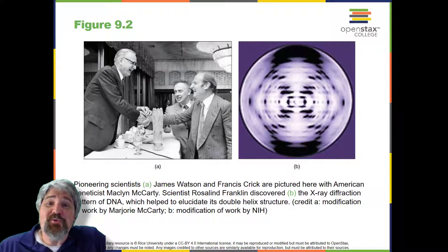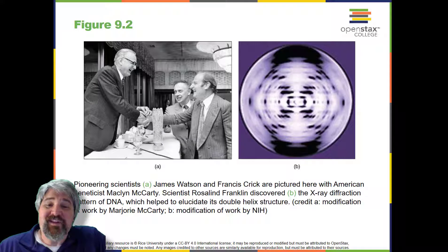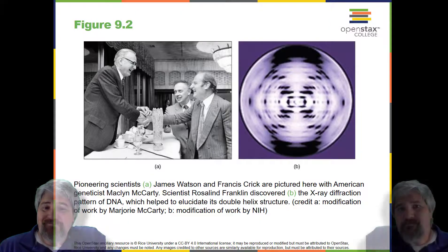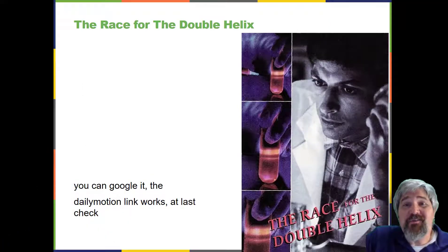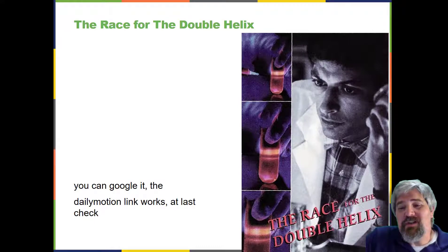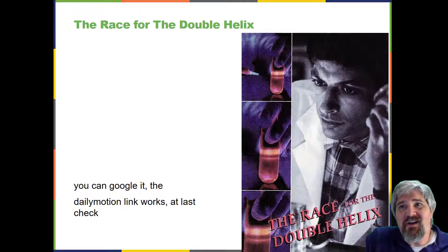In 1962, James Watson, Francis Crick, and Maurice Wilkins were awarded the Nobel Prize in Medicine for their work in determining the structure of DNA. Rosalind Franklin did not receive the Nobel Prize because she had died, and they don't award the Nobel Prize posthumously. There is a movie from the 1980s, only released on VHS but findable via Google, demonstrating the race for the double helix and the drama behind the scenes of this discovery. It features a very young Jeff Goldblum.